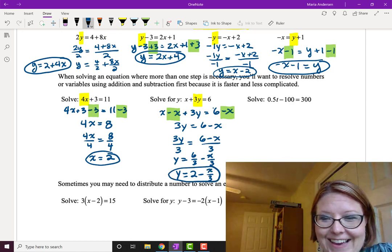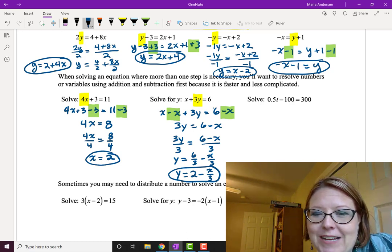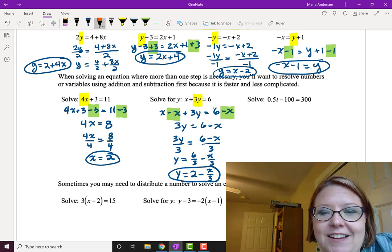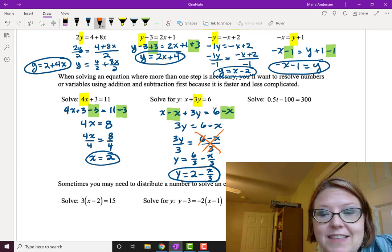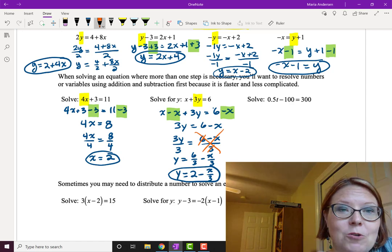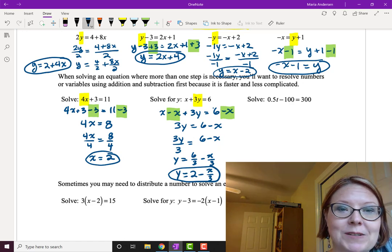Notice here that it's super tempting when you have 6 minus x over 3, to just somehow magically cancel the 6 and the 3 and make 2. That is not allowed here. You have to split the fraction up into two pieces. So don't be a victim of that one. It's tempting, but you know better.